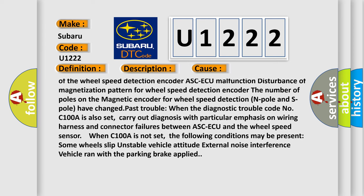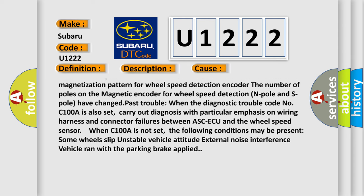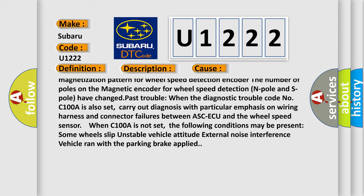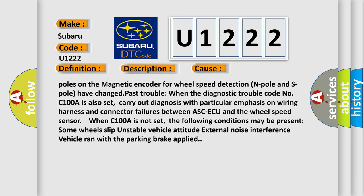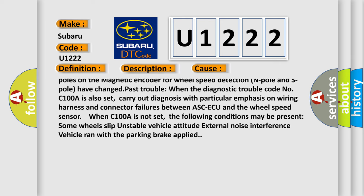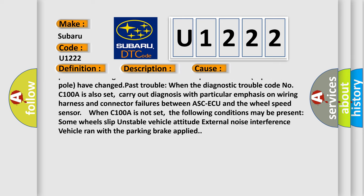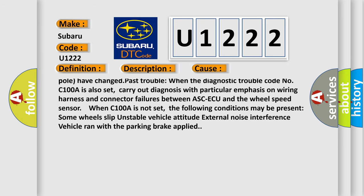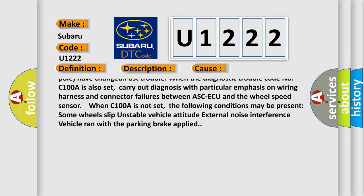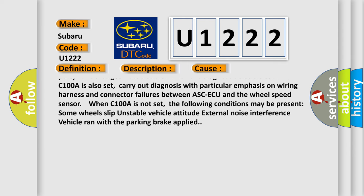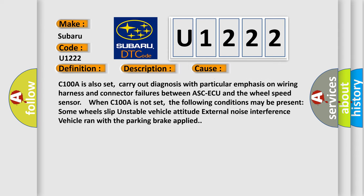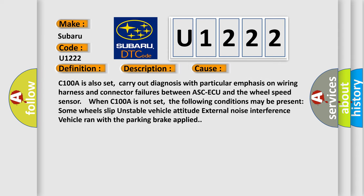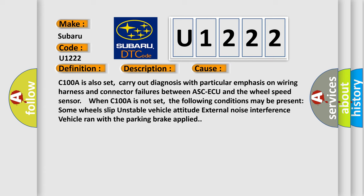When C100A is also set, carry out diagnosis with particular emphasis on wiring harness and connector failures between ASC-ECU and the wheel speed sensor. When C100A is not set, the following conditions may be present: Some wheels slip, unstable vehicle attitude, external noise interference, vehicle ran with the parking brake applied.